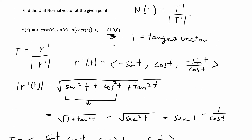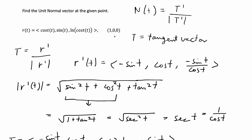Instead of solving for the magnitude of T' for any general t, I'll use the given point (1, 0, 0). Thinking of r(t) as a position function, I need to find the time t where r(t) gives position (1, 0, 0). For the first component, cos(t) = 1 implies t = 0. Checking all three components: cos(0) = 1, sin(0) = 0, and ln(cos(0)) = 0. So t = 0 corresponds to this point.